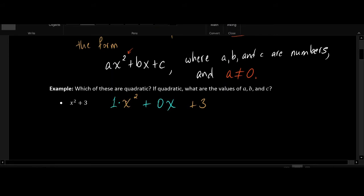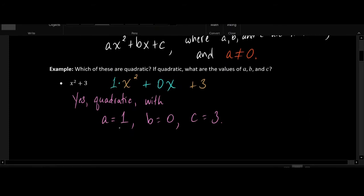So this expression is quadratic with an a value of one, since we have one times x squared; with a b value of zero, since we have zero x's; and a c of three, where c is our constant—the number that's not attached to any x's which is being added in the back. So we have a quadratic expression with a equals one, b equals zero, and c equals three.